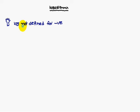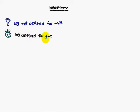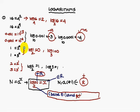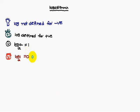So the key points to remember are: logarithm is defined for positive values only, not for negative values. Log a base a is always equal to 1. And log 1 base a is always equal to 0.